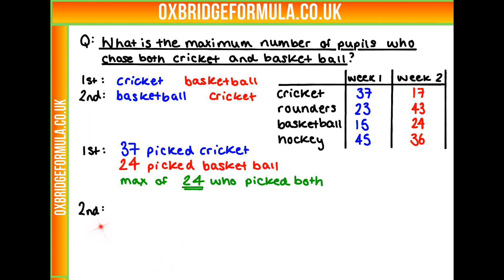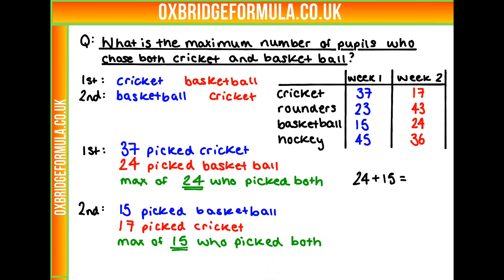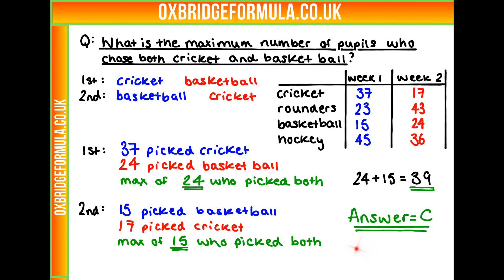If I do the same for the second group — those who chose basketball in the first week, there were 15, and cricket in the second week, there were 17. Therefore, there's a maximum of 15 who picked both. Adding those two together: 24 plus 15 is 39. So the maximum number of people who picked cricket and basketball is 39, which gives us an answer of C.